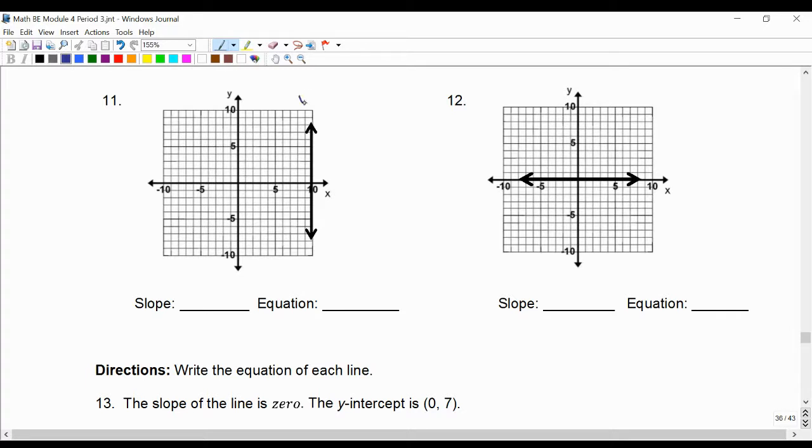All right, hopefully you tried these. This one is vertical, which means the slope is undefined, and the equation is x equals ten. The last one in this batch is horizontal, and it's y equals zero.